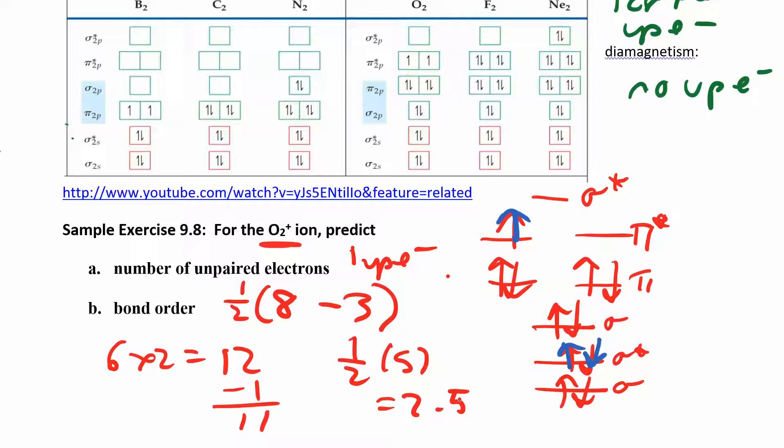So that's one half of 5, which is 2.5. So O2 plus has a bond order of 2.5, which means it's somewhere between a double and a triple bond.